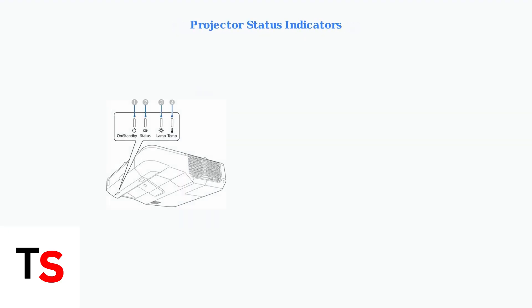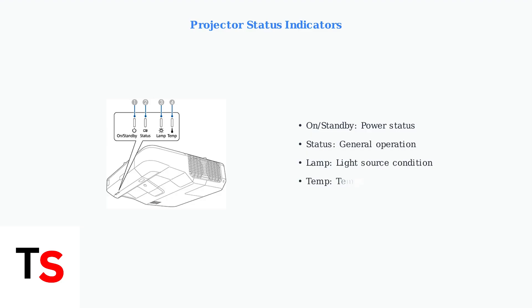Your projector's control panel provides valuable diagnostic information. The lamp and temperature indicators are particularly important for identifying flickering causes. A flashing lamp light often signals the need for replacement.